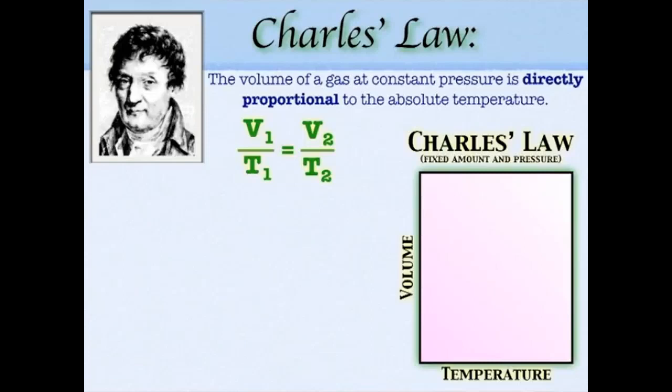Charles' Law is the relationship between volume and temperature. Think of Charlie Brown with a balloon: if he went into a meat locker, the balloon would get smaller. If you don't believe me, take a balloon full of air and stick it in the freezer — it will get smaller. Kinetic molecular theory explains this well: if molecules slow down, the collisions go down, and since a balloon has a variable volume, it shrinks.